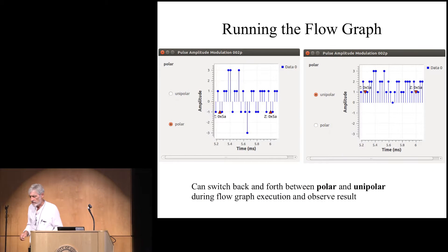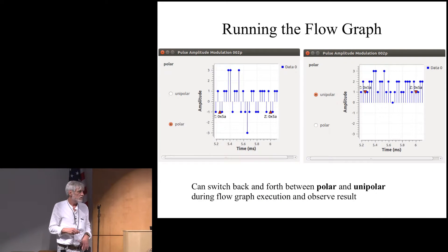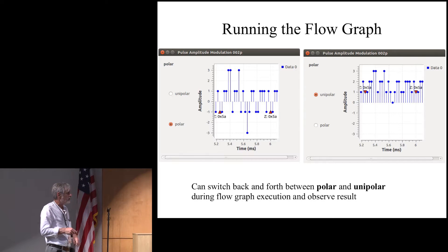Okay, and so here I just for variation, I chose to look at two bits at the time. So my symbols are now four valued symbols and each of those has two bits. So we have for polar, we have negative and positive numbers, minus three, minus one, one and three.